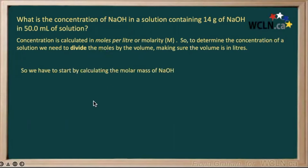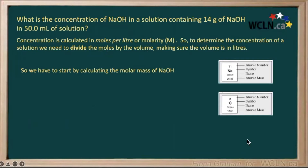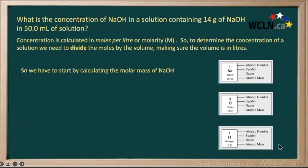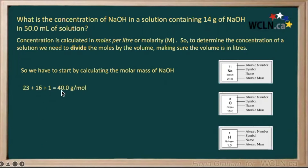We're going to start by calculating the molar mass of our sodium hydroxide. Let's go to the periodic table and look at our elements. From here, we can look at the atomic mass and calculate our molar mass. We have one atom of sodium, one of oxygen, and one of hydrogen. Totaling their atomic masses, we get 40 grams for one mole of sodium hydroxide.